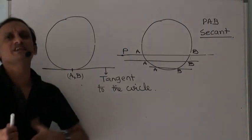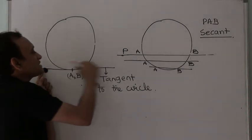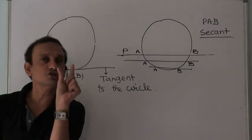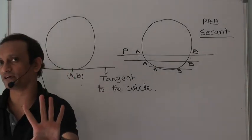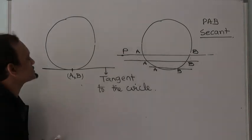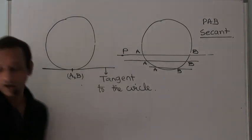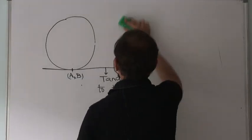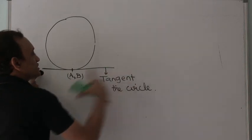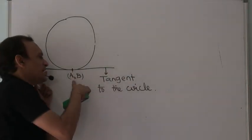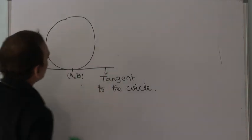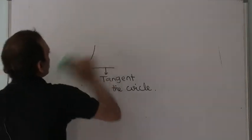The tangent physically intersects the circle at one point; in fact, mathematically this is two coincident points. That's what a tangent is. Now let me look at a property of the tangent to a circle — a tangent intersecting the circle physically at one point but mathematically at two coincident points A and B.